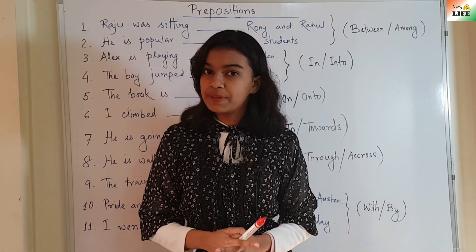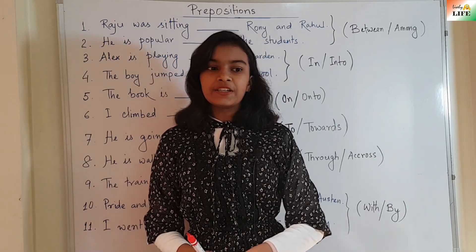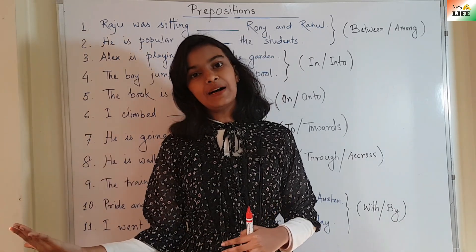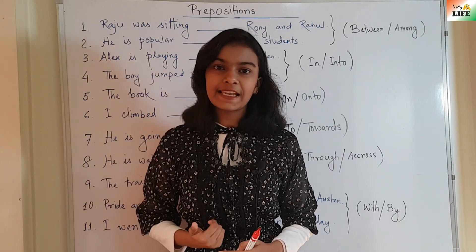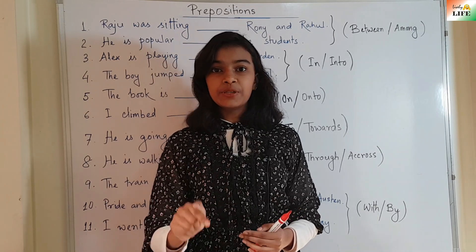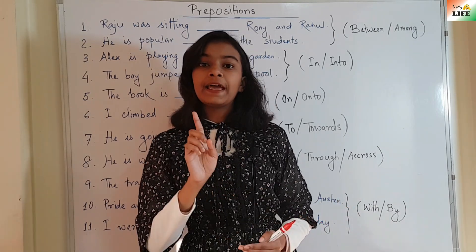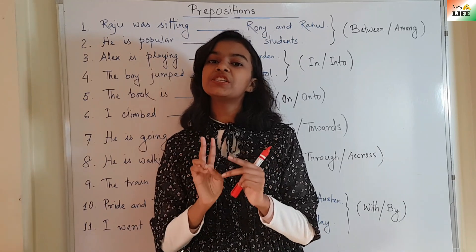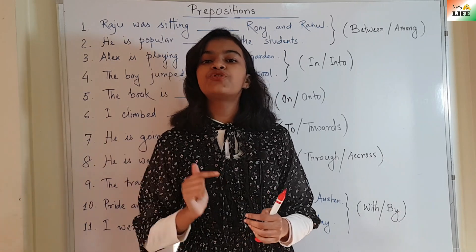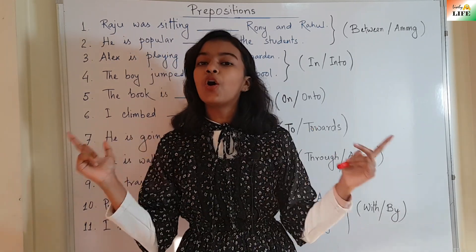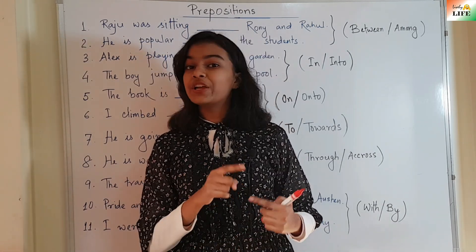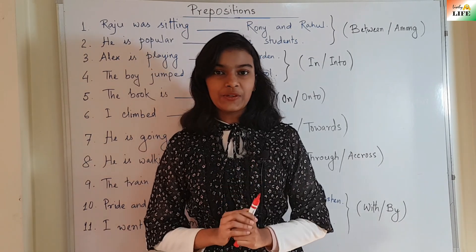It might not be people — there might be any choices. So, if there are two choices, use 'between'. If there are more than two choices, use 'among'. Let's take an example. The teacher distributed the sweets between the two students. Here we use 'between' because we are just talking about two people. But the teacher distributed sweets among all the students of the class. Here we are talking about more than two people, so we use 'among'.